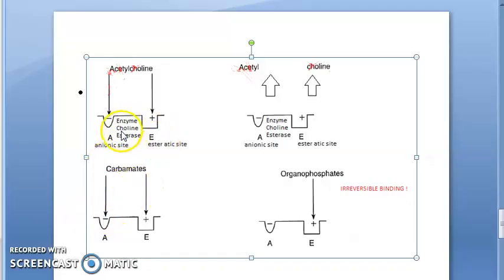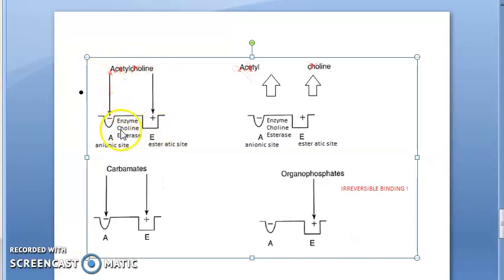Let's see how exactly cholinesterases work. This is a cholinesterase enzyme. It has two sides: an anionic side and an esteratic side. Acetylcholine binds to both of these sides and then acetylcholine gets degraded to acetyl and choline. That much is very easy to understand, right?